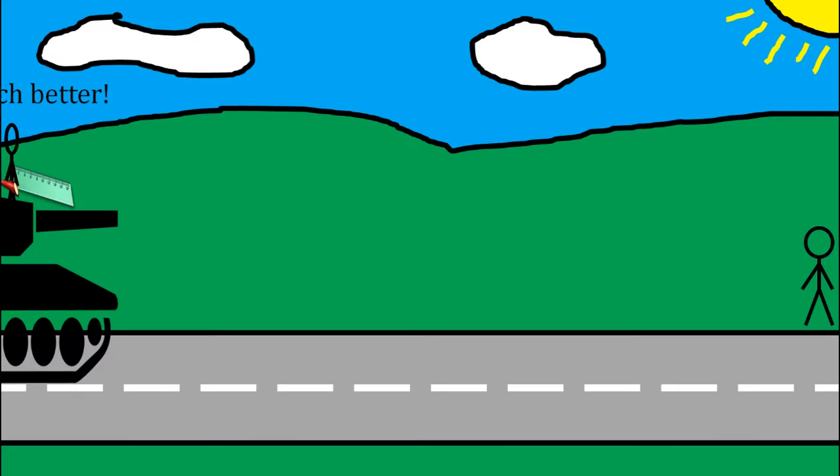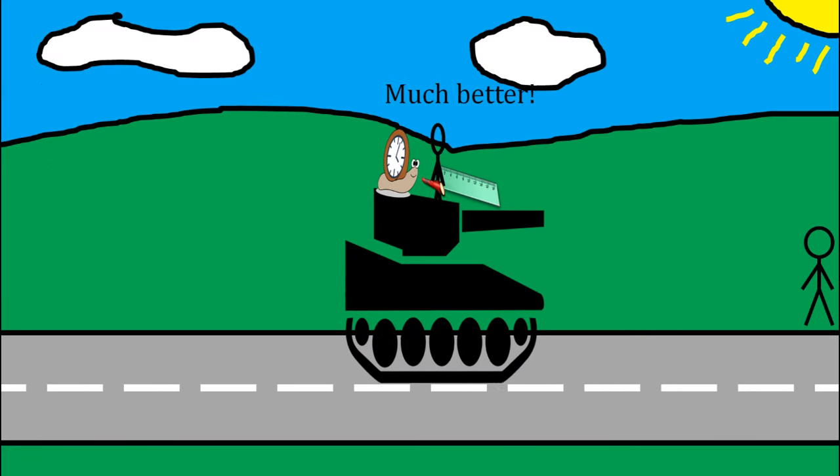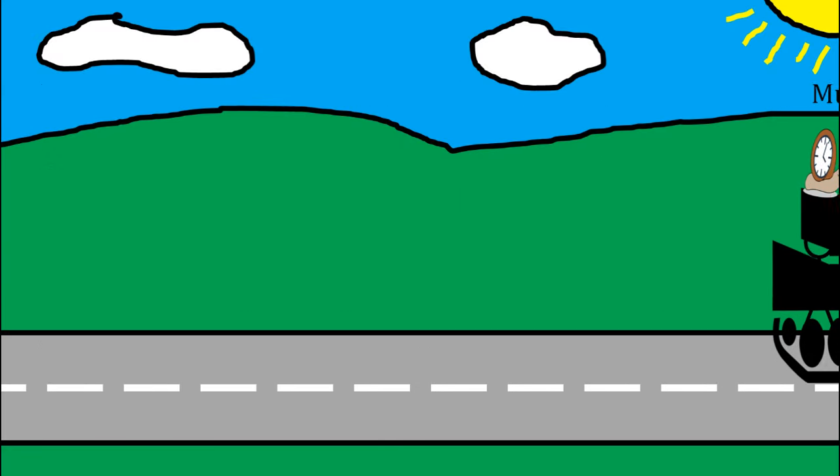So objects also become shorter as they approach light speed. This is called length contraction.